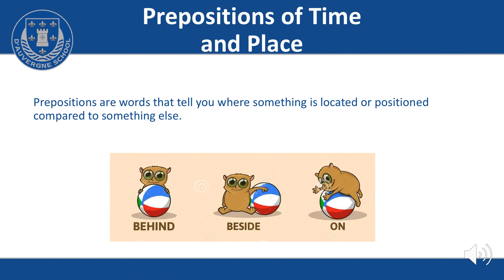Prepositions are words that tell you where something is located or positioned compared to something else. So if we have a look at our image below here, we've got our little alien person. To start with he is behind the ball, then he is beside the ball, and finally he is on top of the ball. We could say that the ball is under our little alien person on the last picture, and that the ball is in front of the alien person on the first picture.